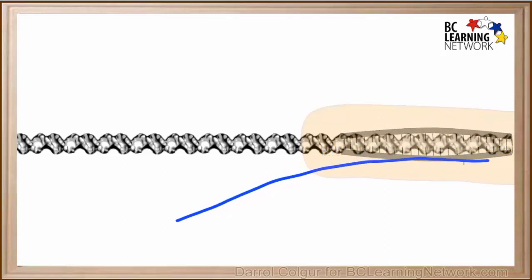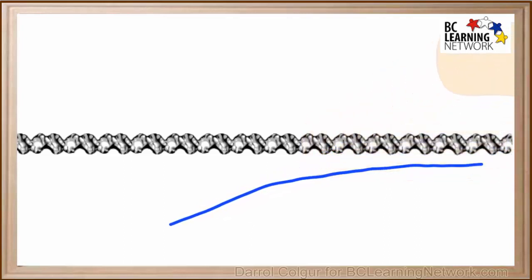The terminator sequence signals transcription to stop happening, the DNA bubble closes up, and the new mRNA molecule separates from the strand, and the RNA polymerase leaves.